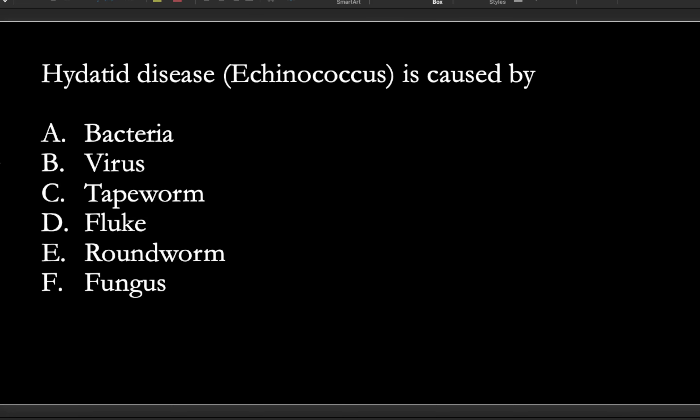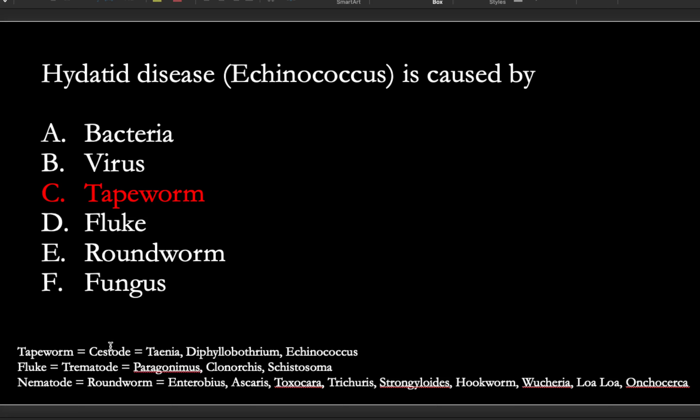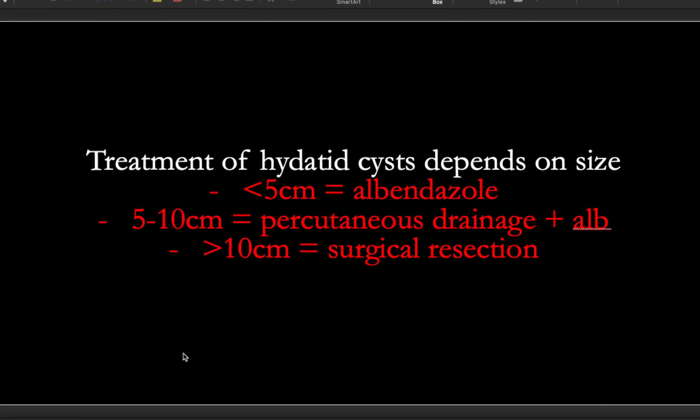You might be asked what echinococcus is caused by — is it a bacteria, fungus, tapeworm, fluke, or roundworm — cestode, trematode, nematode? Echinococcus is a tapeworm. Screenshot the parasite classification chart — it's really high yield. Nematodes include almost all of them, so just know what's not a nematode and rule from there. When it comes to treatment of hydatid cysts, look at size: if it's over 10 cm, you take it out. One key question: if a woman is having surgical resection of hydatid cyst disease and suddenly develops respiratory distress, this is due to an anaphylactic reaction.